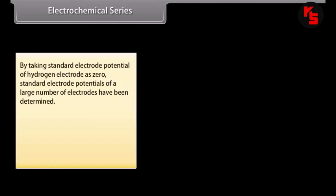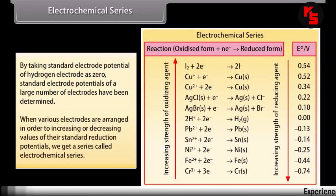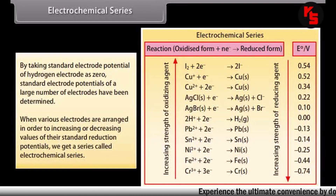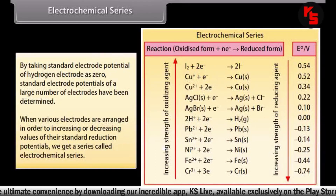Electrochemical Series. By taking the standard electrode potential of the hydrogen electrode as zero, standard electrode potentials of a large number of electrodes have been determined. When various electrodes are arranged in order of increasing or decreasing values of their standard reduction potentials, we get a series called the electrochemical series.